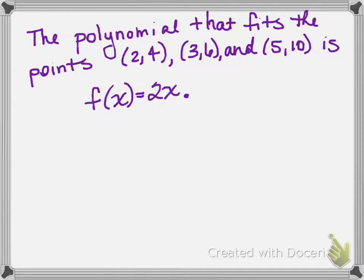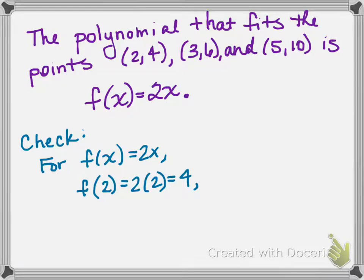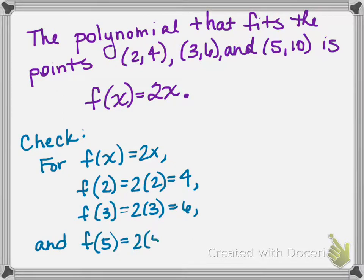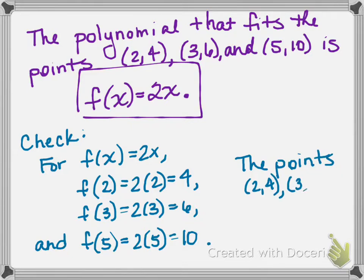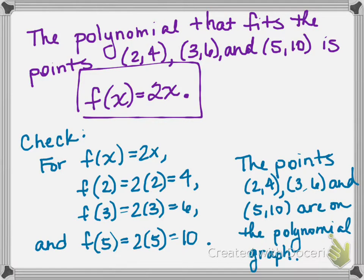It is actually a line. That's the polynomial that best fits those three points. And we can check this. For f(x) = 2x, we can go back and say, well, f(2) is 2 times 2, which is 4. f(3) is 2 times 3, which is 6. And f(5) is 2 times 5, which is 10. So the polynomial we found actually does go through the three points that we're given. And that's our final answer.